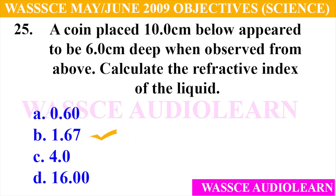Question 25: A coin placed 10.0 cm below a liquid surface appeared to be 6.0 cm deep when observed from above. Calculate the refractive index of the liquid. A. 0.60, B. 1.67, C. 4.00, D. 16.00. And the answer is B, 1.67.